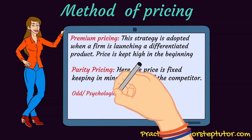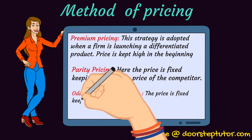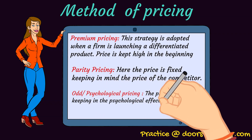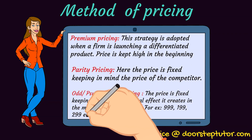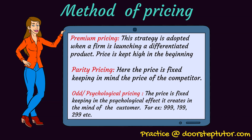Now, odd or psychological pricing. The human mind reacts differently to different things. When we see a tag of 999 or 199, we are more attracted to buying the product because we think that the product is not that costly. This is psychological pricing, wherein the organization plays with the mind of the customer. The price is fixed in a way that looks attractive and cheap at the same time.